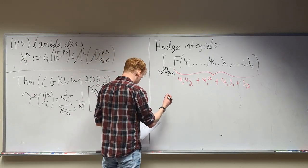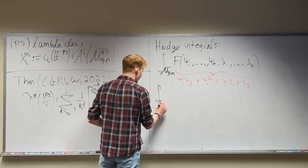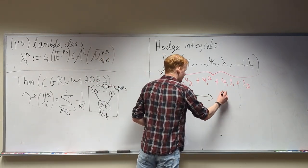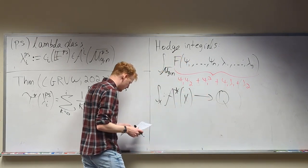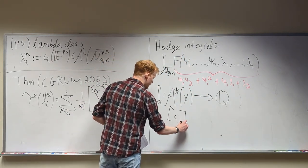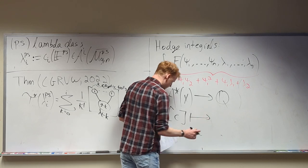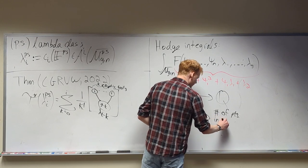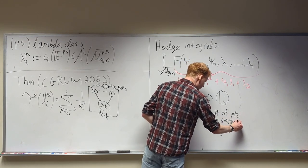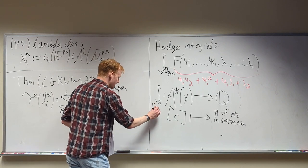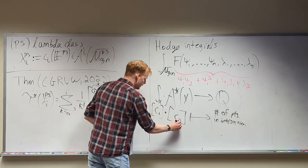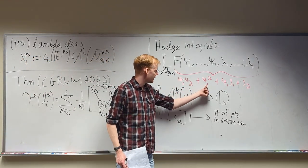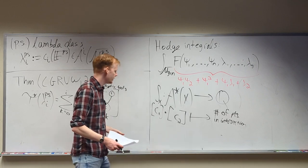An integral over a variety is a map from the Chow ring of that variety to the rationals or integers, where it takes a cycle and tells you the number of points in the intersection. If I have a product of two cycles c_1 and c_2, how many points are in that intersection? For example, integrating over P^2: if I have a line intersecting a line, those two lines intersect in one point, so the answer is one.